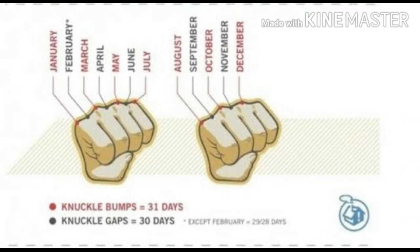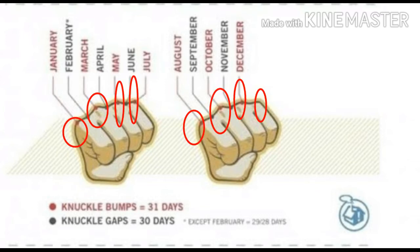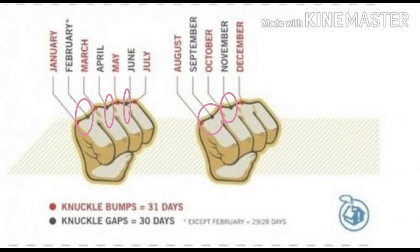Number of days in each month — learn करने का तरीका यह है: आप देख सकते हैं screen पर picture show की है। जब आप अपना hand close करते हो तो जो knuckle bumps दिखते हैं वो 31 days के होते हैं और knuckle gaps जो हैं वो 30 days के होते हैं। So January, March, May, July, August, October और December में होंगे 31 days.